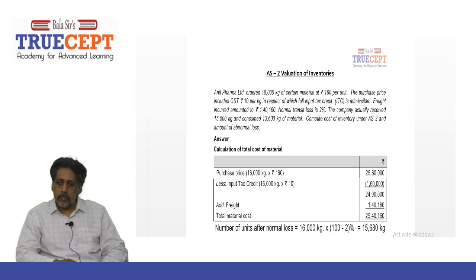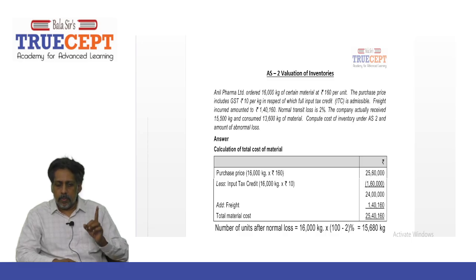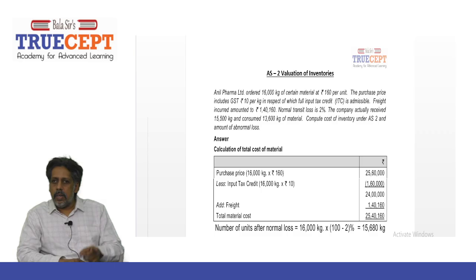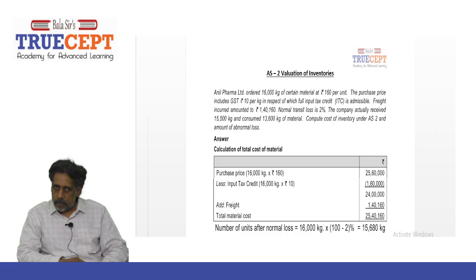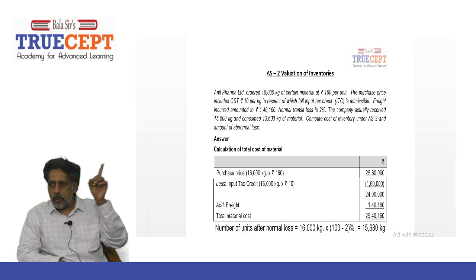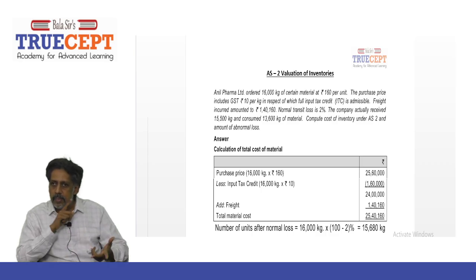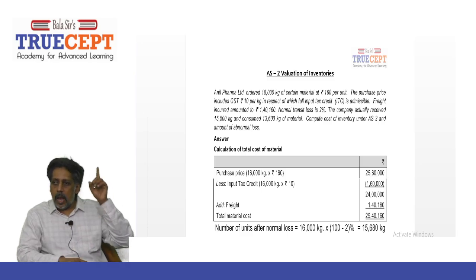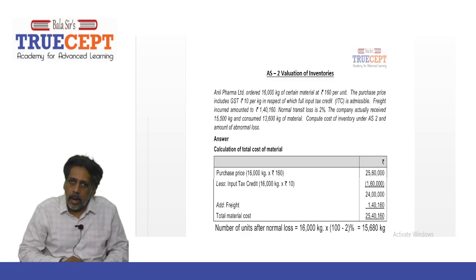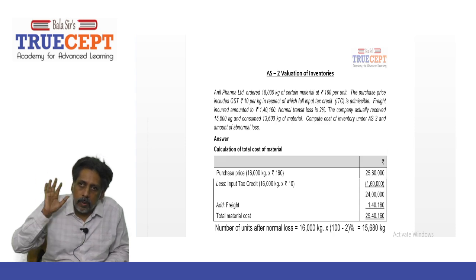The company actually received 15,500 kilograms and consumed 13,600 kilograms of material. Now, 16,000 kilograms into 2 percent is 320 kilograms of normal loss. That means 16,000 minus 320 — your company should have received 15,680 kilograms. But the actual quantity received was only 15,500 kilograms. That means 180 kilograms is abnormal loss.